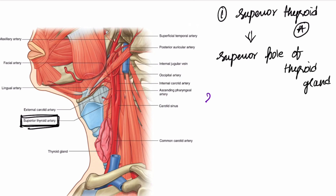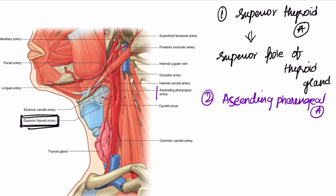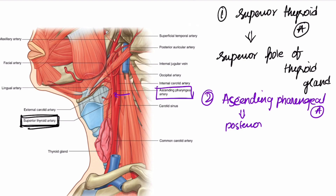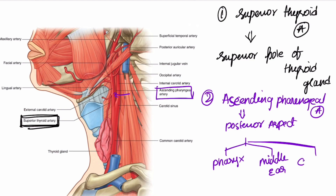The second branch is the ascending pharyngeal artery. It arises from the posterior aspect and supplies the pharynx, the middle ear, the cranial meninges, and some of the pre-vertebral muscles.